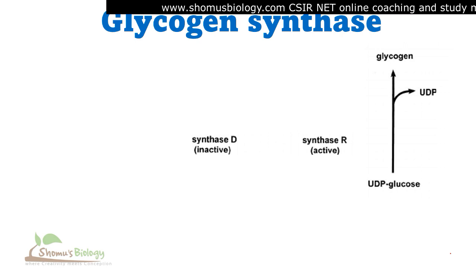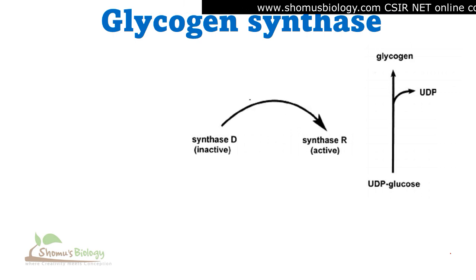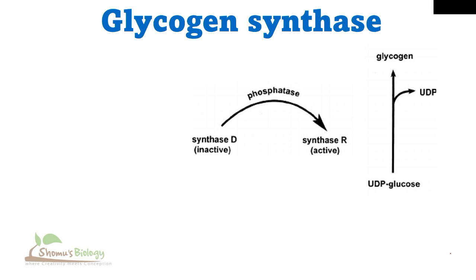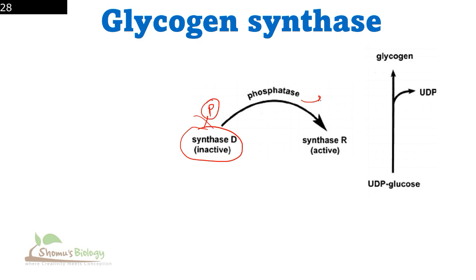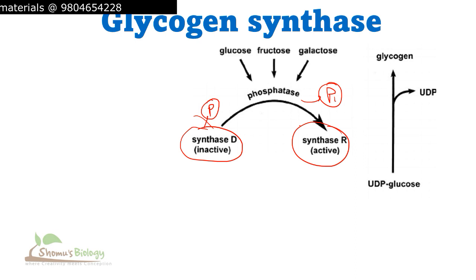How exactly does this process work? There is a conversion of the inactive glycogen synthase D form into the glycogen synthase R form, which is the active form. In this case, a phosphatase enzyme is involved. A phosphatase enzyme cleaves a phosphate group from the glycogen synthase D form to convert it into glycogen synthase R form. Remember, the glycogen synthase enzyme once tagged with a phosphate is inactive. The phosphatase enzyme cleaves this phosphate group out, making glycogen synthase into the R form or active form, and this process is triggered by the presence of glucose, fructose, and galactose.